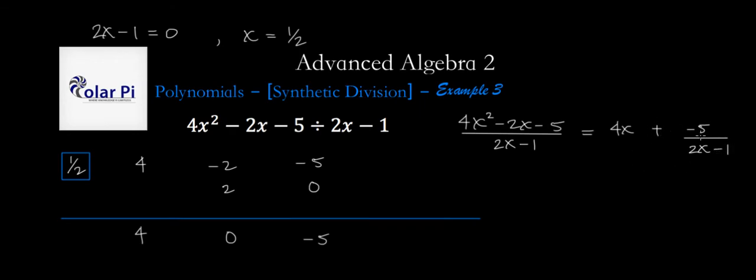So feel free, instead of writing plus negative 5 over 2x minus 1, to just write minus and then 5 over 2x minus 1, but that's the only fix I'll show you. Otherwise, in other words, instead of plus minus 5, you could just write minus right here and then use a positive 5 in the numerator here. But yeah, otherwise, that's it for example 3, and keep watching. Take care.